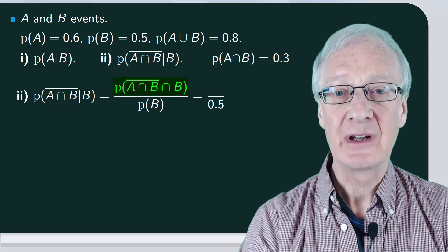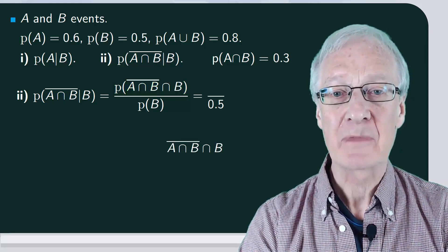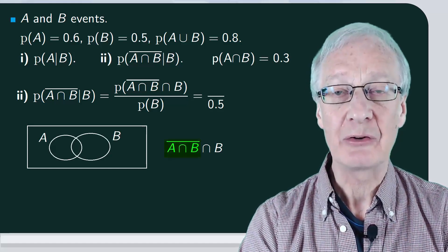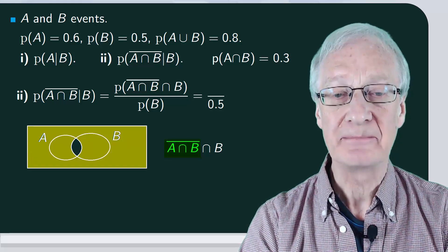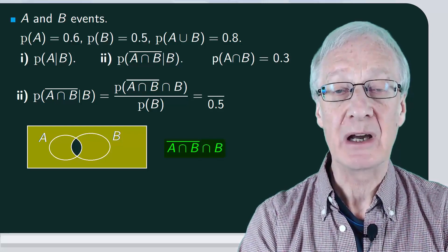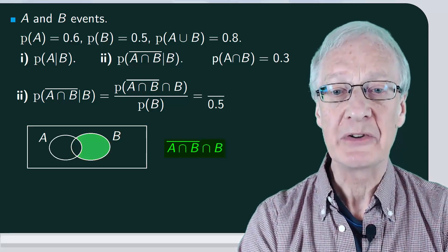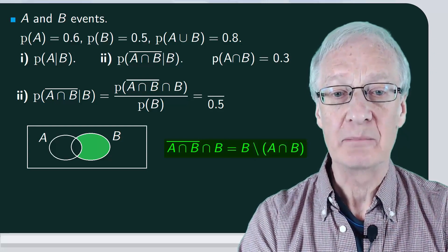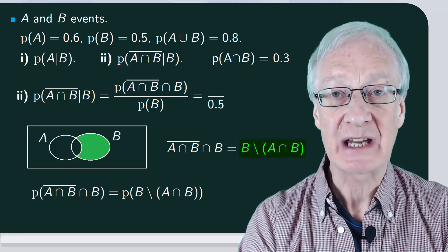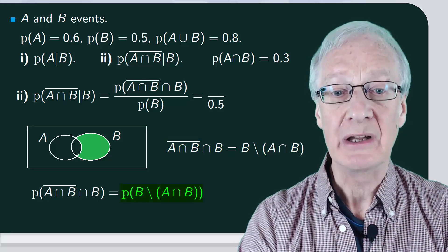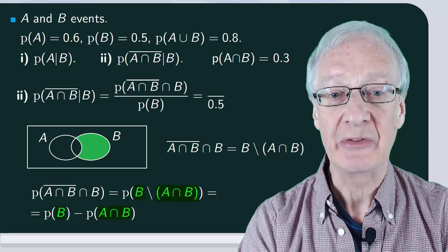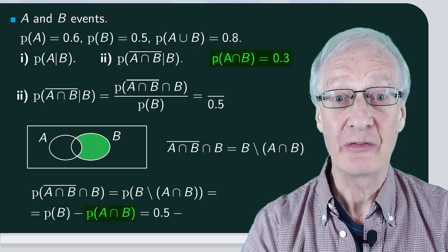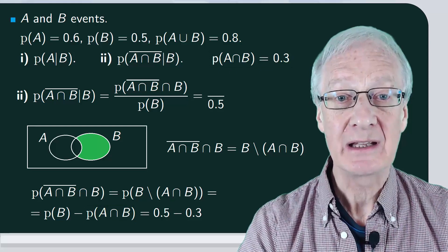To calculate this, let's reason where the event occurs. Suppose this is the sample space E, and here we have our events A and B. What we've outlined in yellow is the complement of A, intersection B, and this is intersected by B, which is shown in green. The previous event is clearly B minus A intersection B. So the probability is the probability of B minus A intersection B, which is the probability of B minus the probability of A intersection B: 0.5 minus 0.3, giving 0.2.